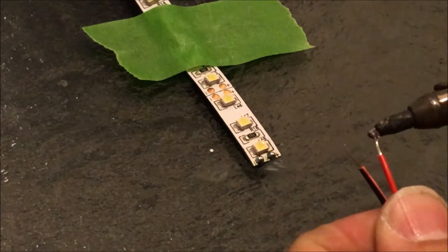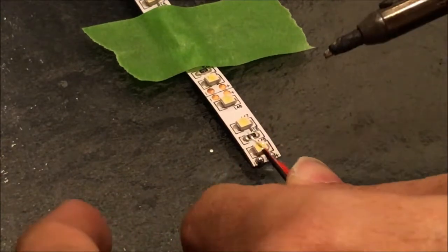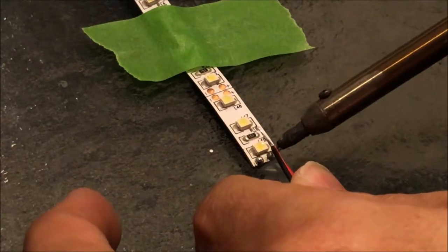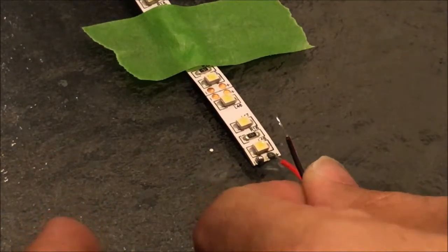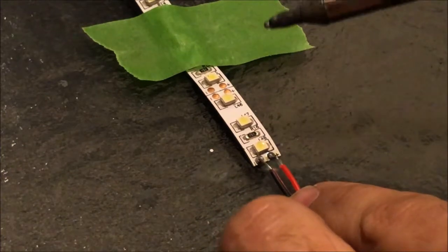All right, I've got a little bit of solder there. Get a little bit of solder on my wire, and we're just going to make this connection. All right, there's our positive connector.